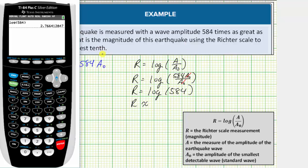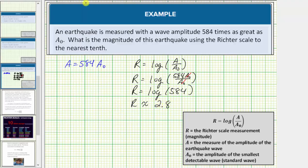We're asked to round to the tenths place value, or one decimal place. Because there's a six in the hundredths place value, we round up to approximately 2.8. So the magnitude of the earthquake is approximately 2.8 on the Richter scale.